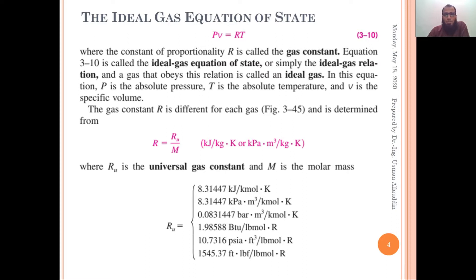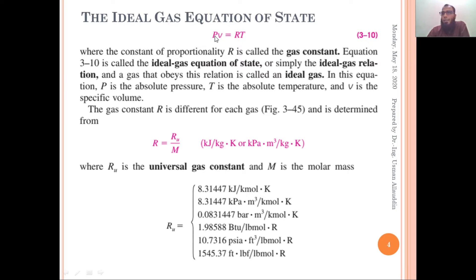You must memorize the units of the main parameters like R and Ru. The gas constant R has units of kJ/kg·K. The universal gas constant Ru has units of kJ/kmol·K and its value is 8.31447 kJ/kmol·K. The universal gas constant has one value for all gases. Note: if you use R in kJ/kg·K, then temperature should be in Kelvin and pressure should be in kilopascal, not pascal, to maintain dimensional uniformity.